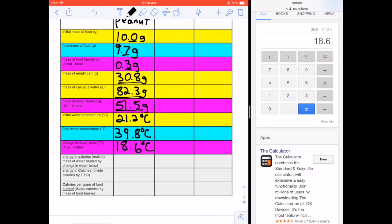Okay, so now I'm going to calculate the last three rows. Energy in little c calories. So to get that I multiply the mass of the water heated by the change in the water temperature. So the mass of the water heated was 51.5, the change in the water temperature was 18.6. 957.9 little c calories.